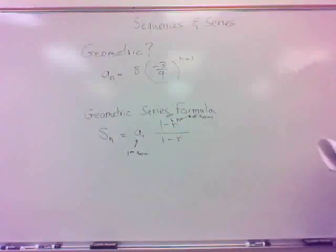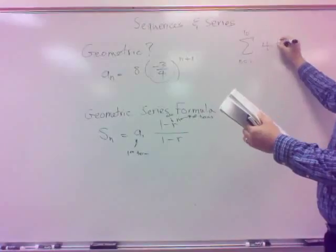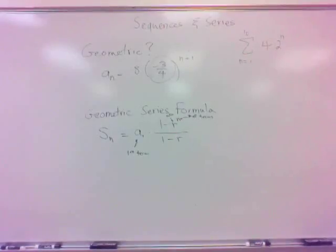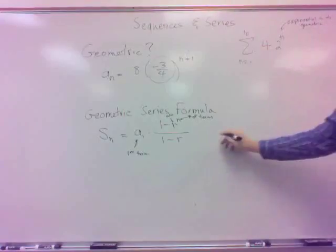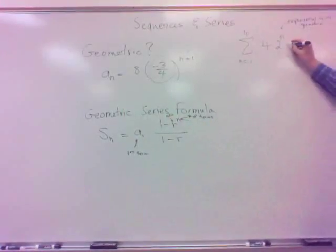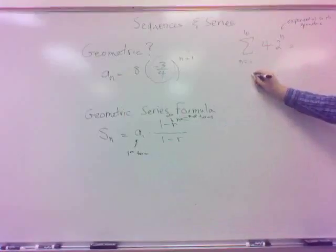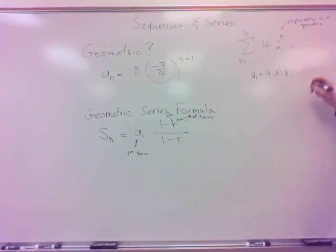So this is the sum of the n terms of a geometric series. Take the first term, and then multiply it by this expression there. So what's sum n equals 1 to 10, the first 10 terms of 4 times 2 to the n? Is that geometric? Yes, it is. It's exponential, so it's geometric. So I can use this formula for a geometric one. So that says instead of having to add up all 10 terms there, what I can do is take the first term, which the first term would be 4 times 2, 8. The first term is 8.